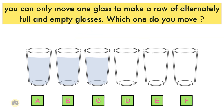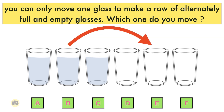After performing this action, glass B is empty and glass E is full. The row now reads: A is full, B is empty, C is full, D is empty, E is full, F is empty. Thus, by moving only one glass, we can achieve a row of alternately full and empty glasses.